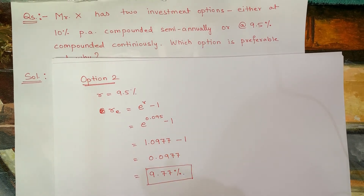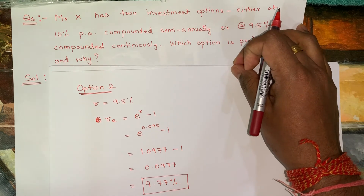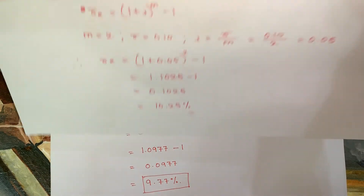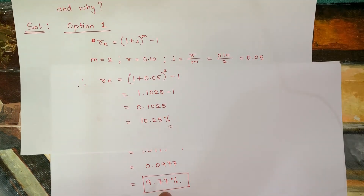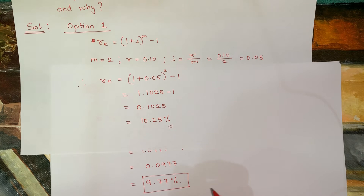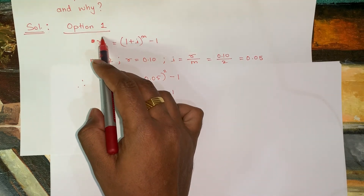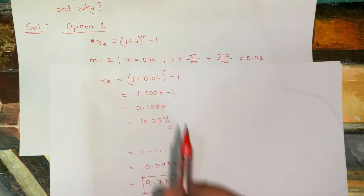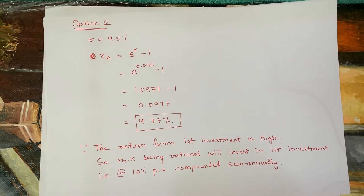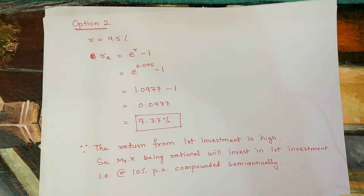Option 1 gives a return of 10.25% whereas Option 2 gives a return of 9.77%. So a rational investor will choose Option 1. Mr. Hicks will invest at the rate of 10% per annum compounded semi-annually.